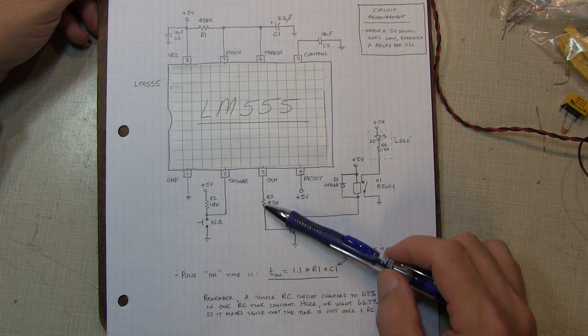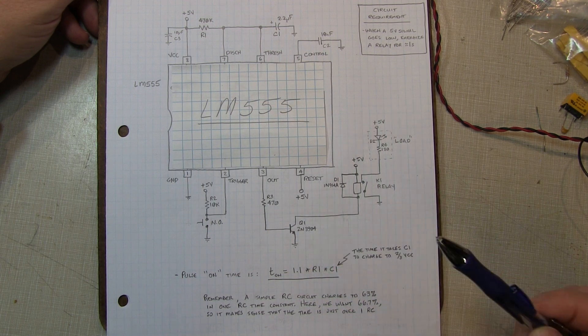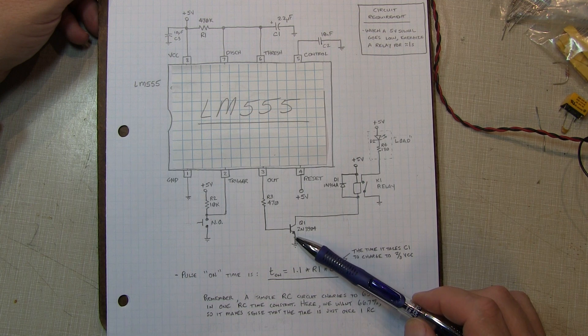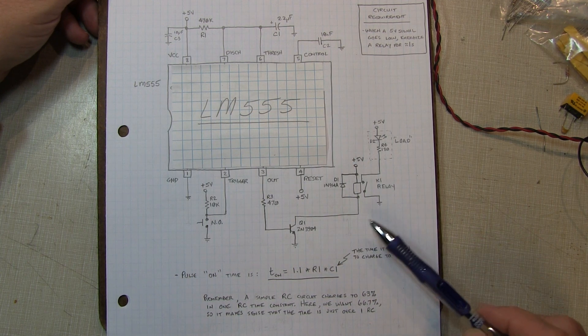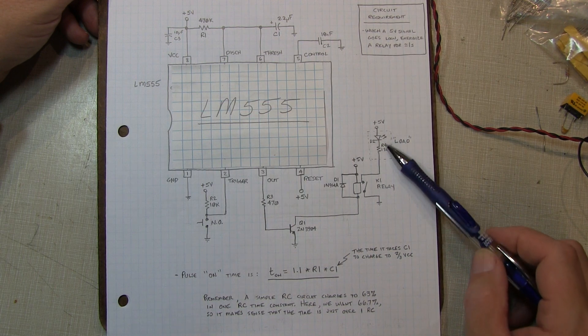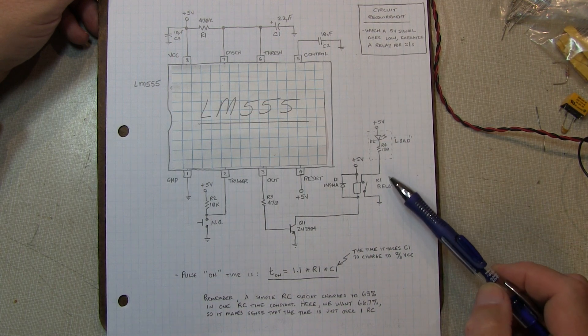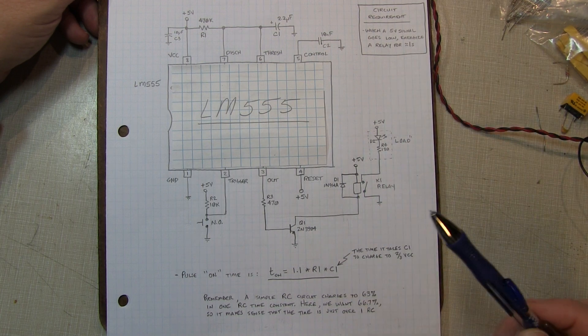The output is just going through a current-limiting resistor into a 2N3904 general-purpose NPN transistor, which is going to pull current through the coil of the relay, energizing the relay, and thus energizing the load. In my case, the load is a simple LED and current-limiting resistor. But in his particular application, that may be something completely different.